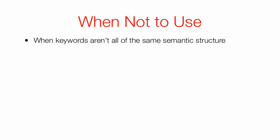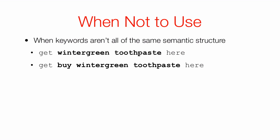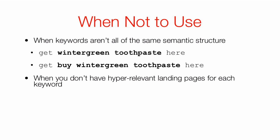When shouldn't you use Dynamic Keyword Insertion? When the keywords aren't all the same semantic structure — it just won't look good. For example, 'get wintergreen toothpaste here' looks fine, but if the same ad group has the keyword 'buy wintergreen toothpaste,' the line reads 'get buy wintergreen toothpaste here' — that just looks silly. Also, don't use it when you don't have hyper-relevant landing pages for each keyword. DKI makes ads appear custom-made for the search, but if you then send people to a generic landing page, they'll notice — like if you typed 'Princeton' and had to choose your team again.